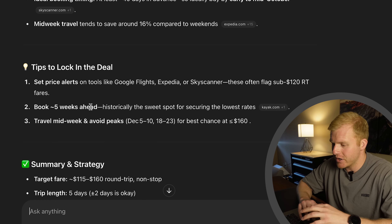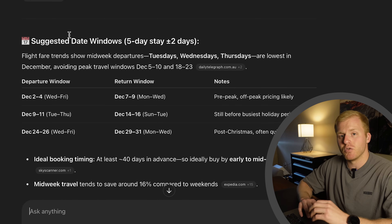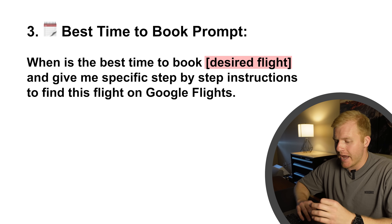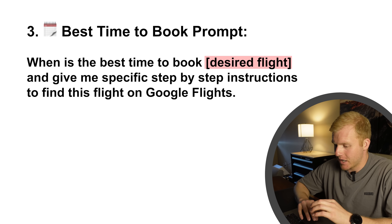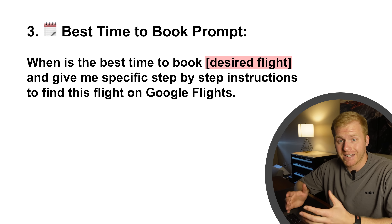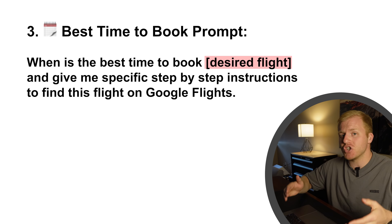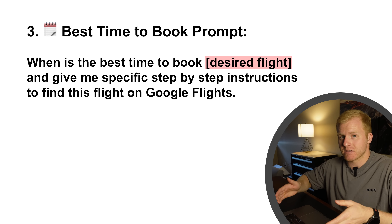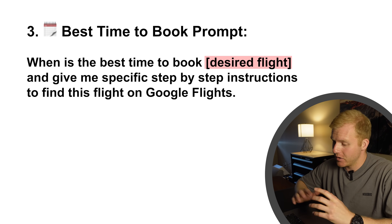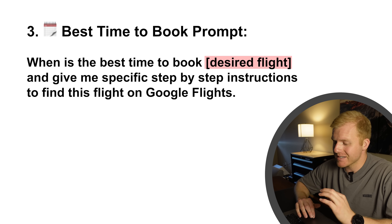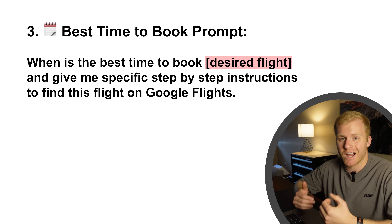It also gives some other booking strategies, but let's move into prompt number three. Our third and final prompt wraps everything together to help give you the information to actually book a cheap flight — I call this the best time to book prompt. It reads: when is the best time to book your desired flight? Plug in any information you have about your flight here, and give me specific step-by-step instructions on how to find this flight on Google Flights.